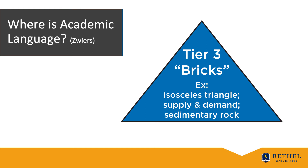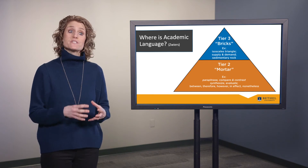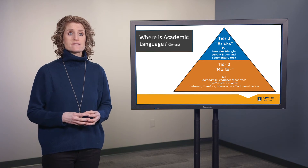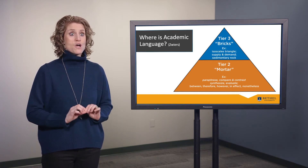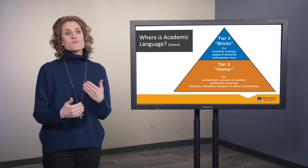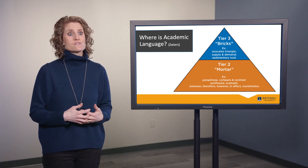In contrast, Tier 3 words are academic terms specific to each domain or content area — words such as isosceles triangle, supply and demand, and sedimentary rock. Teachers tend to focus on Tier 3 because they are the bolded items in their texts and the essence of what they teach. Jeff Zweers, a senior researcher at Stanford University, created the analogy of bricks and mortar to describe how Tier 2 and Tier 3 words relate to each other. He said that Tier 2 words are the mortar while Tier 3 words are the bricks. Although I'm no mason, I know that in order to have a solid wall, we need both bricks and mortar — if we only have bricks and no mortar, the wall will fall. So with this analogy, Zweers wants us to understand that we need the mortar, the Tier 2, in order for our ELs to build their academic voice.